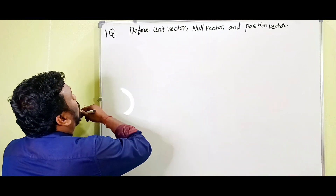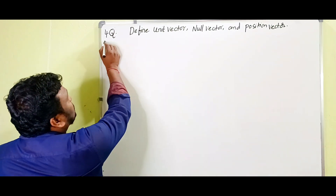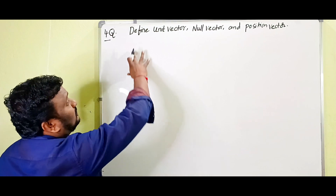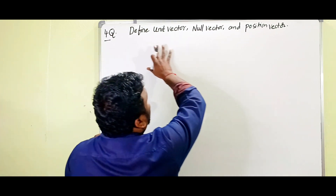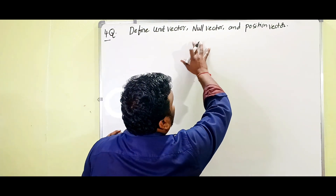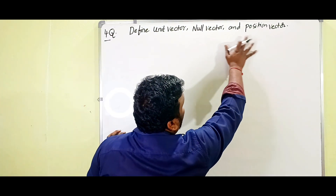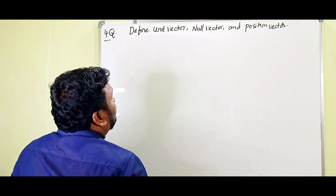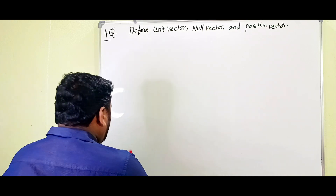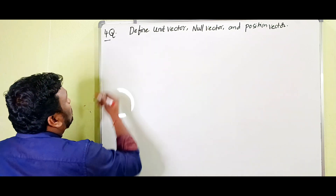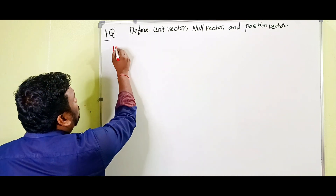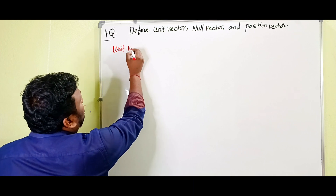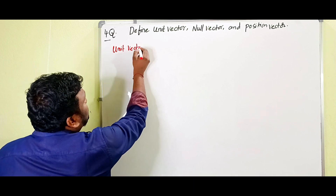This is the fourth short answer question in the textbook Motion in a Plane: what is unit vector, null vector, and position vector? So children, the first thing is — what is a unit vector?